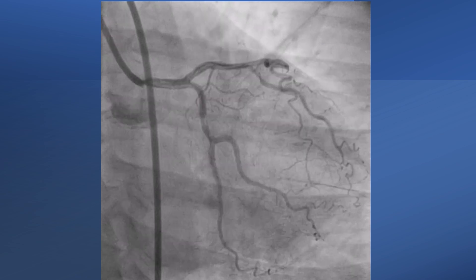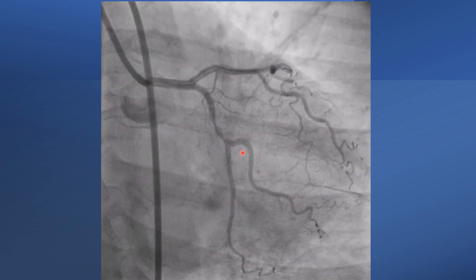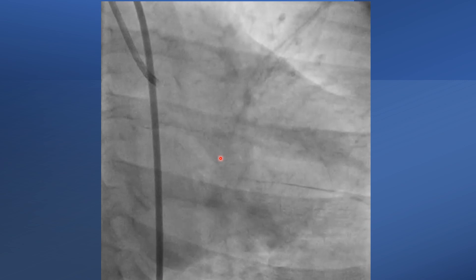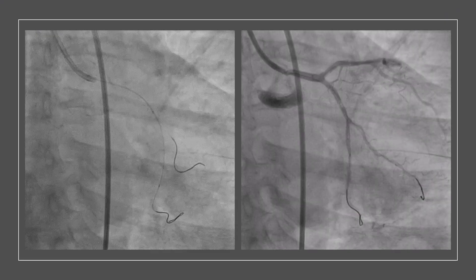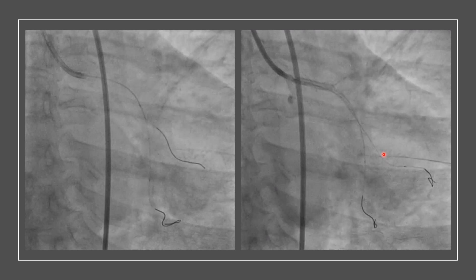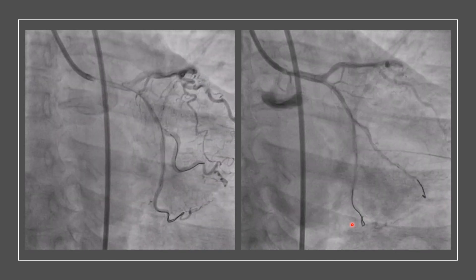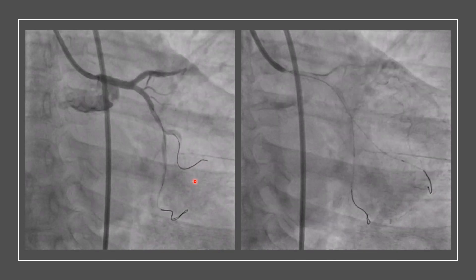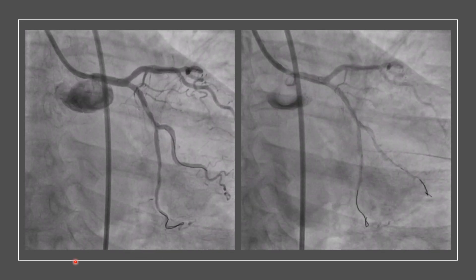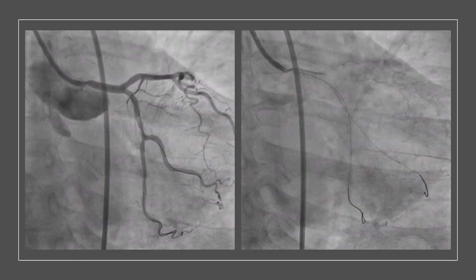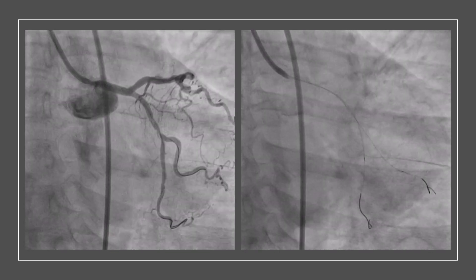Look at this OM branch after a critical part of the circumflex. When it was wired, the pseudo-lesion appeared in the OM branch, and after pulling back and just keeping the floppy part of the wire, everything returned to normal. Thank you.